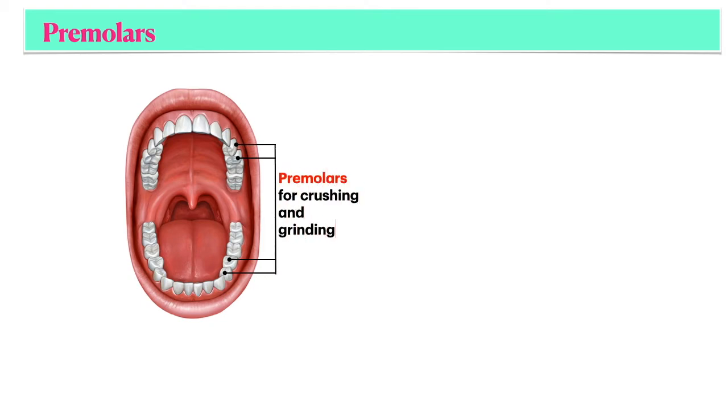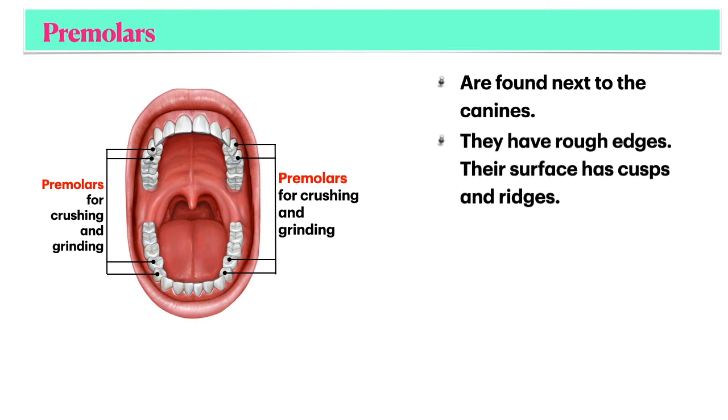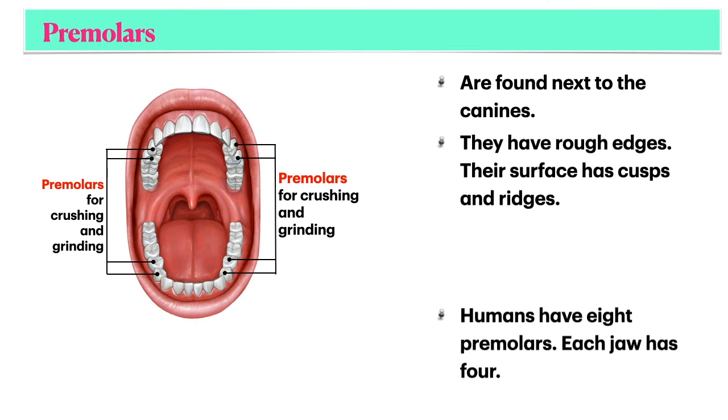Premolars are used for crushing and grinding food. Premolars are found next to the canines. They have rough edges. Their surface has cusps and ridges.